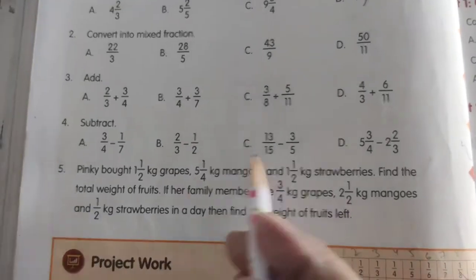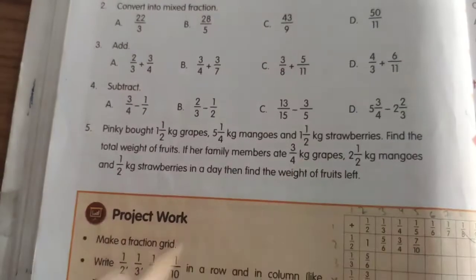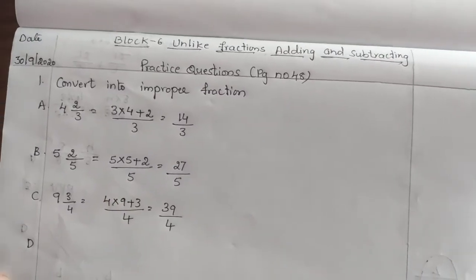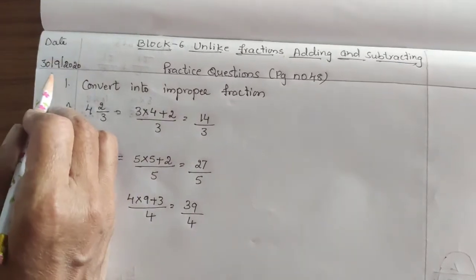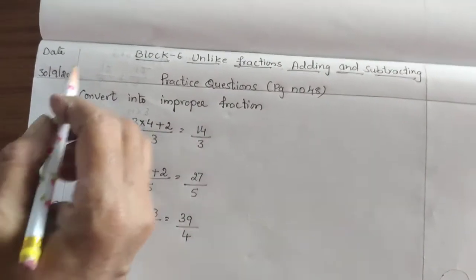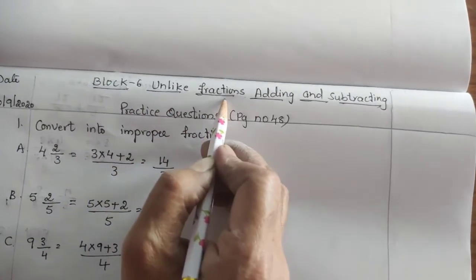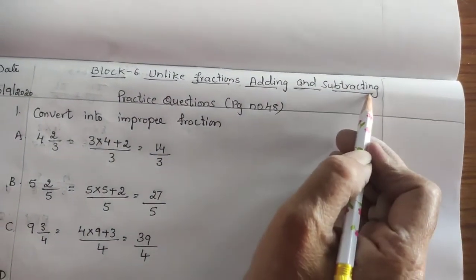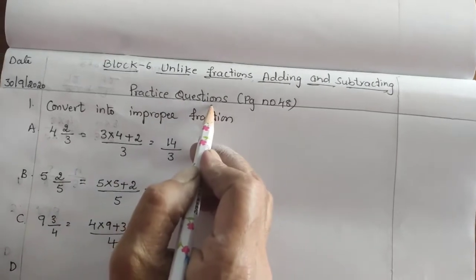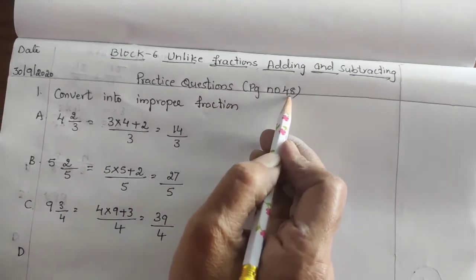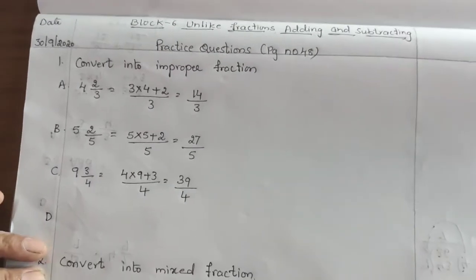So C and D you have to do by your own, children. Write the date: 39, 2020. Write heading: Block 6, unlike fractions — adding and subtracting. Write heading: Practice questions, page number 48. After solving the sums, refer to these answers.